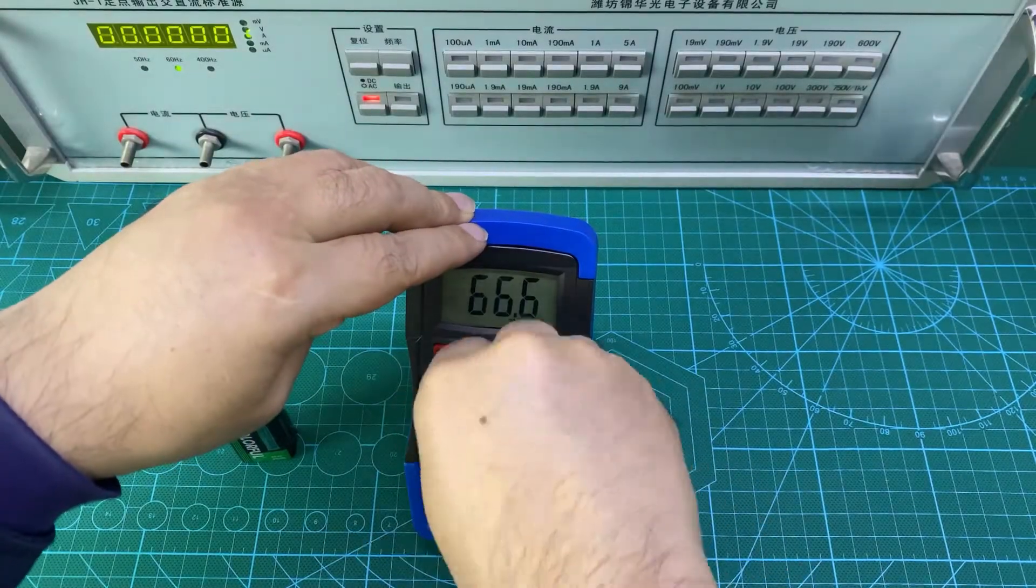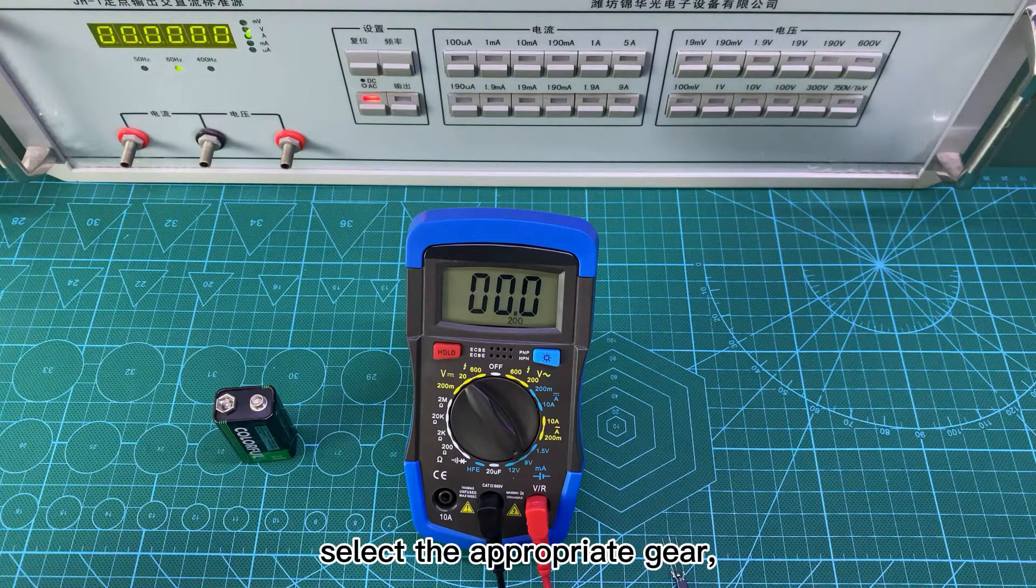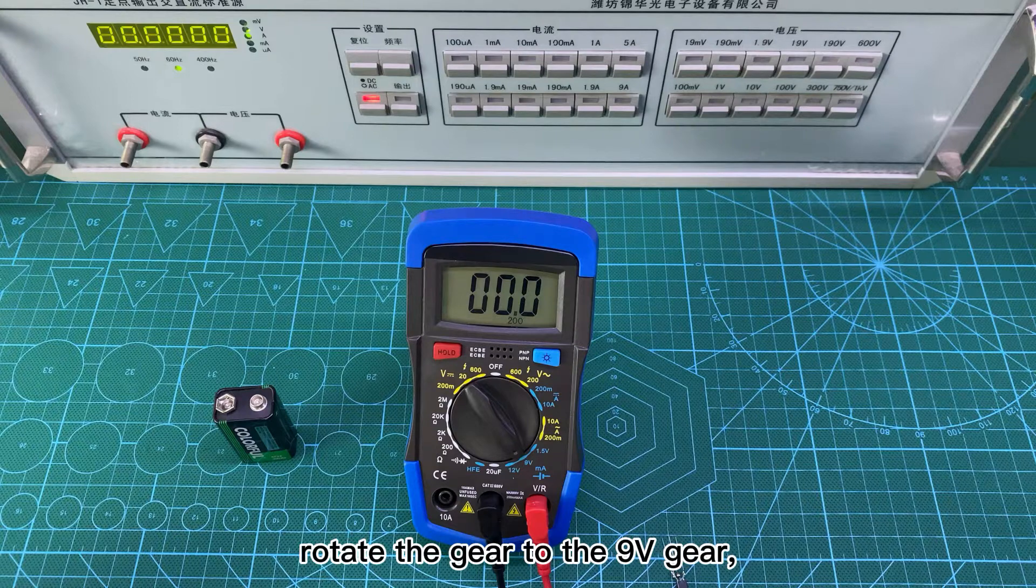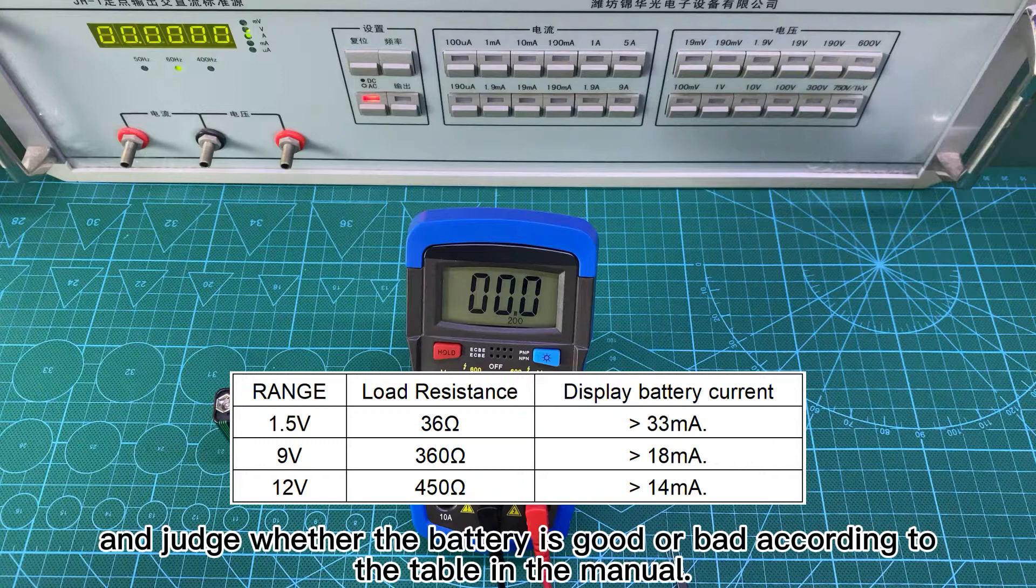Battery measurement. According to the battery range, select the appropriate gear. Measure the 9V battery, rotate the gear to the 9B gear, read on the LCD screen, and judge whether the battery is good or bad according to the table in the manual.